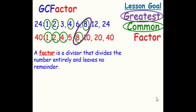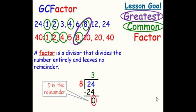A factor is a divisor that divides the number entirely and leaves no remainder. So when we're dividing, 24 divided by 8 is 3. 3 times 8 is 24. 24 minus 24 is 0, leaving us a remainder of 0.